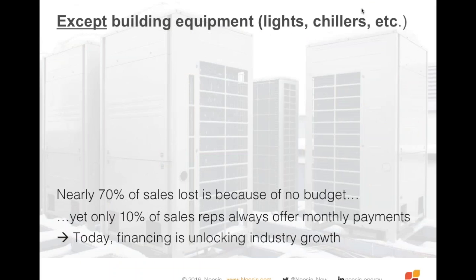Competitively speaking, only 10% of proposals for energy-related equipment — chillers, boilers, lights — that get slid across a desk to a decision maker have any type of payment option or financing associated with them. Usually the only two options are: write a check, or put it in the budget next year. That means 90% of proposals don't have a way to pay outside of cash or next year's budget.